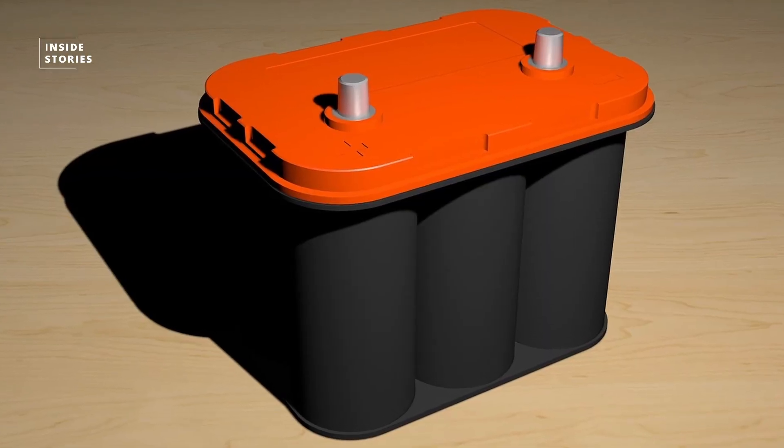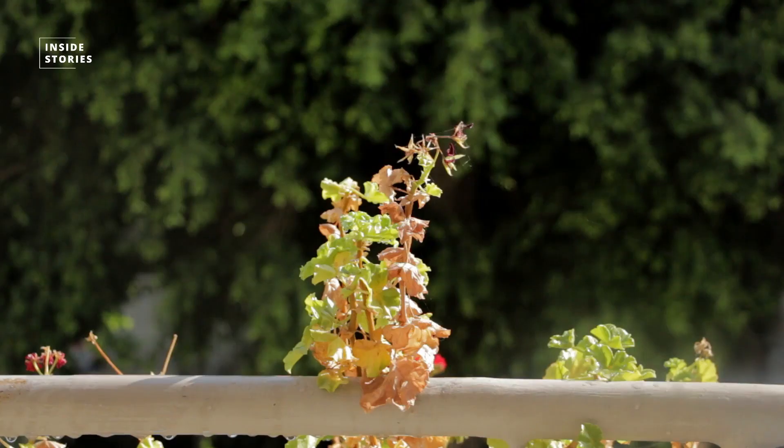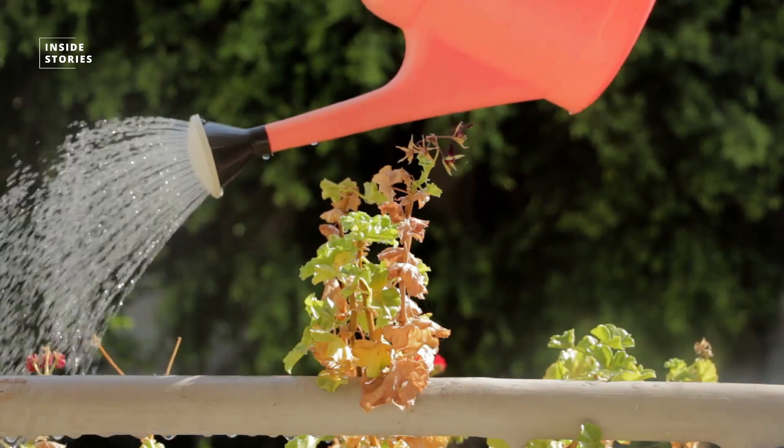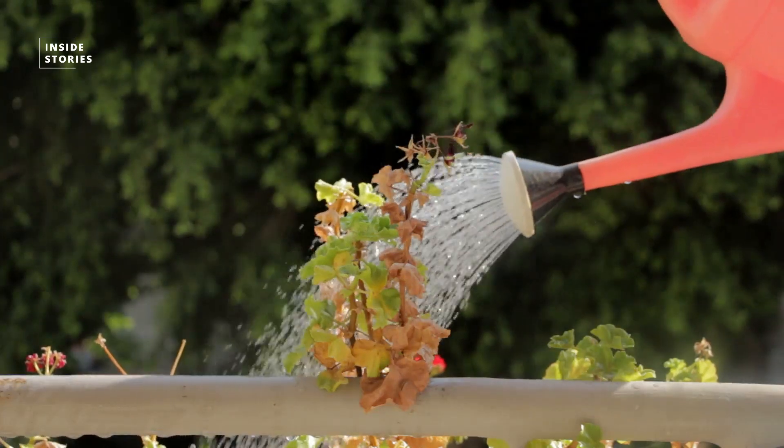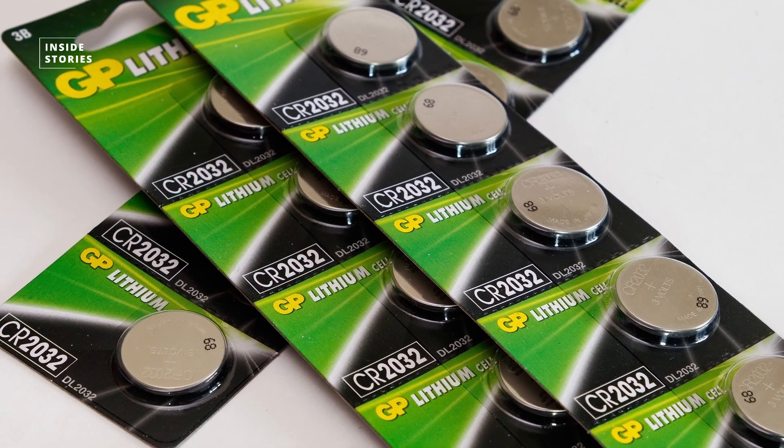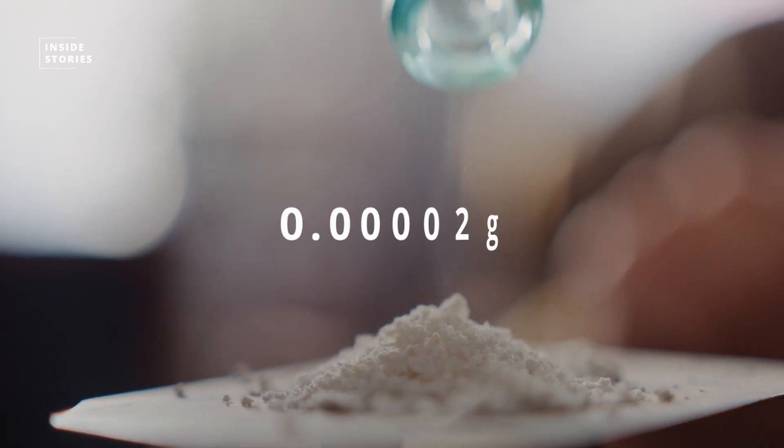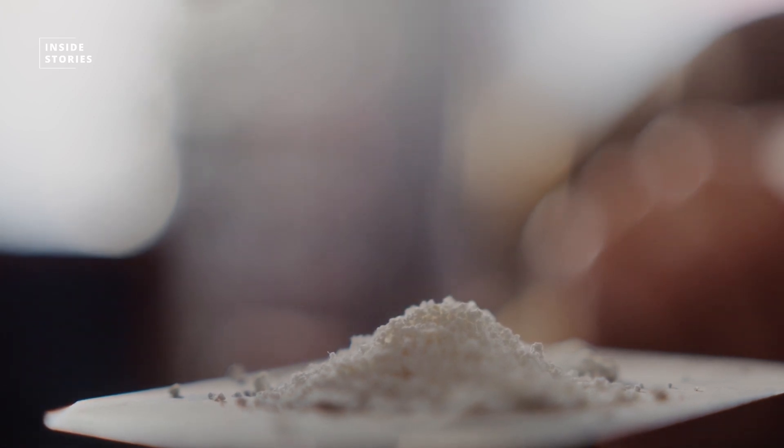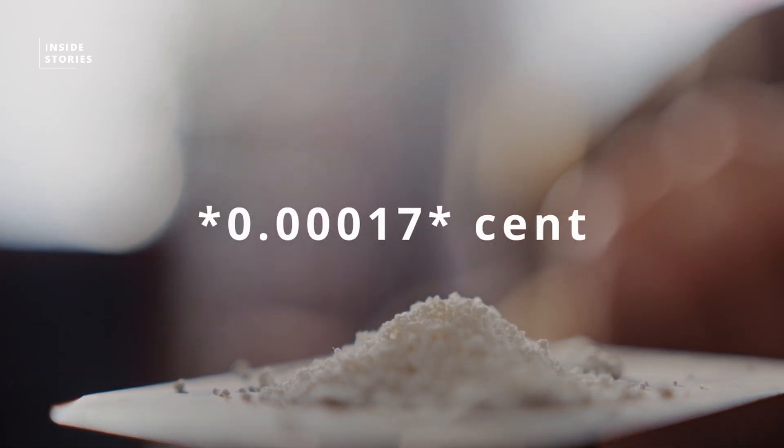Besides that, this battery is also a lot safer, because of its use of biodegradable, non-flammable materials, which are also a lot cheaper compared to materials used in other batteries. A single coin-sized cell battery, for example, would only require 20 micrograms of commercially available chitosan powder, which would cost less than a 20 thousandth of a cent.